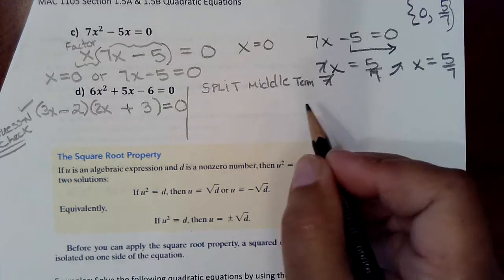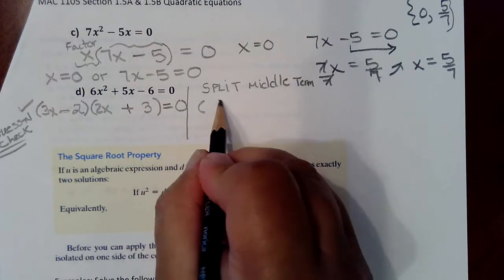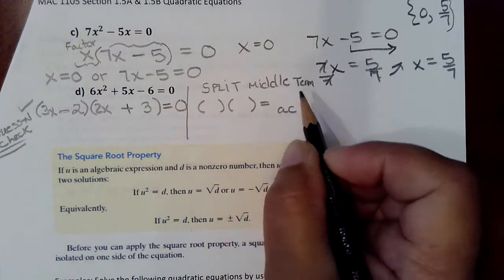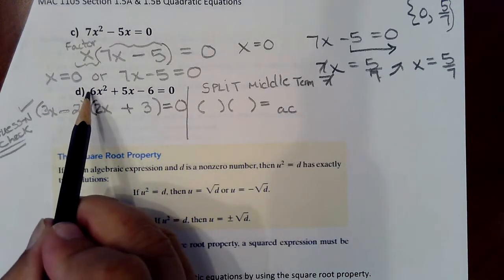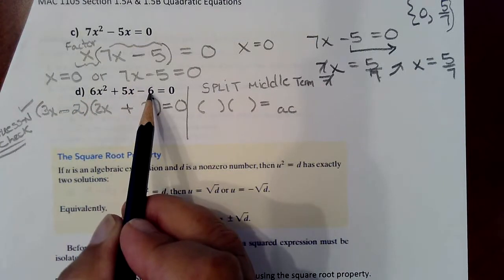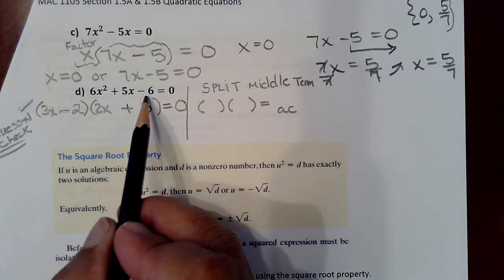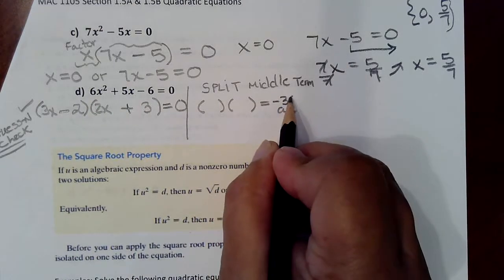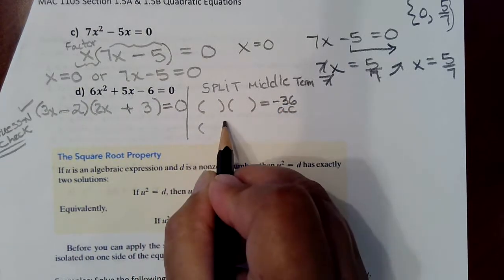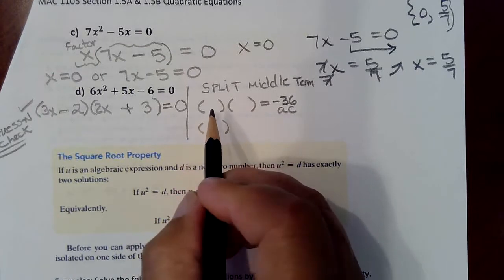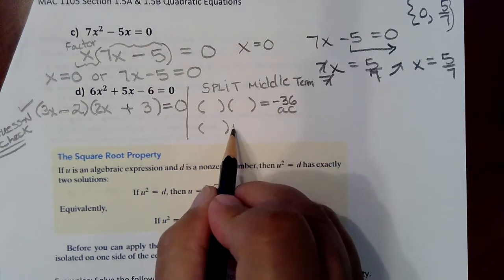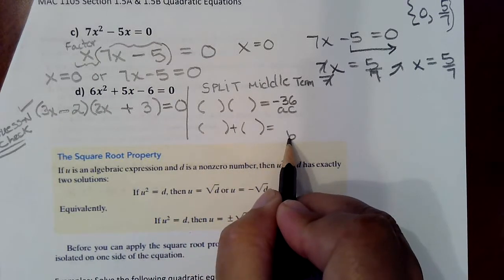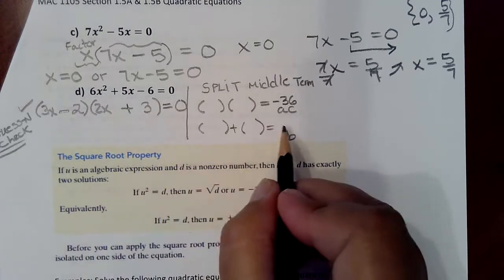You'd be looking for two numbers that when multiplied together give you the A times C value. The A is 6, the C value is negative 6. So A times C would be negative 36. But then these two numbers, whatever two numbers you're going to say multiply to give you negative 36, they have to also add up to give you the B value. The B value is 5.